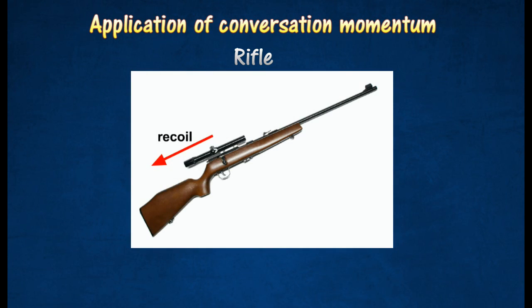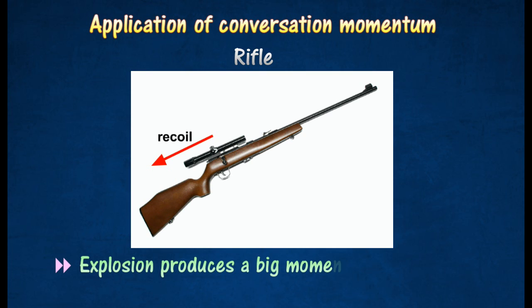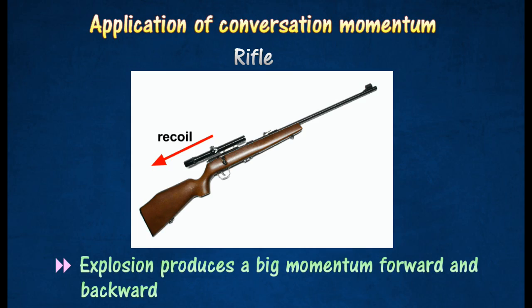When a rifle is fired, the explosion of the gunpowder causes the bullet to shoot out at a very high speed. The explosion produces a large momentum in the forward direction, and therefore the rifle will recoil backward.